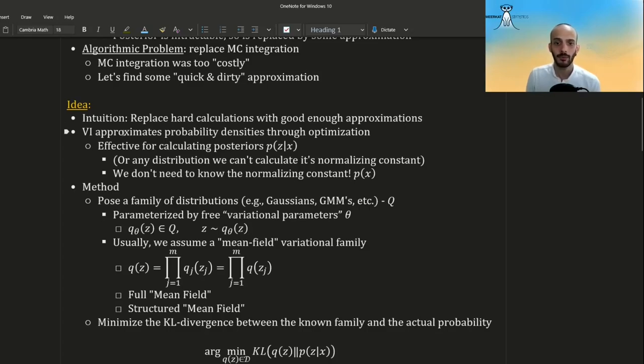And so the basic idea is to replace hard calculations with good enough approximations, and we do this through optimization in variational inference. We are usually trying to calculate the posterior, but it can be done for any distribution where we don't know its normalizing constant.